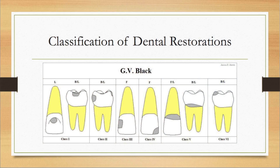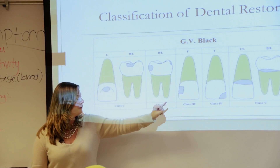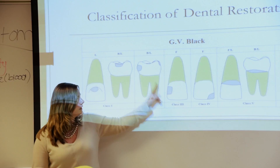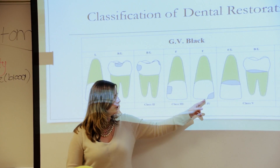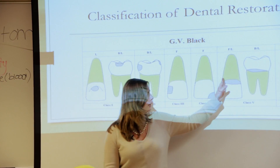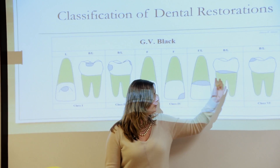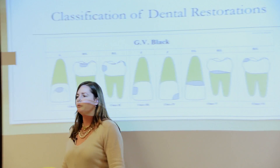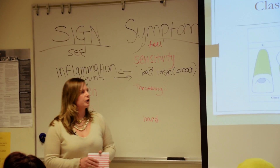This is the classification of GV Black. Class 1 can be on an anterior or posterior tooth in the center of the tooth. Class 2 is a posterior tooth on the side. Class 3 is the side of an anterior tooth. Class 4 includes the incisal edge. Class 5 can be posterior or anterior — always at the gum line. Class 6 is on the cusp tip.